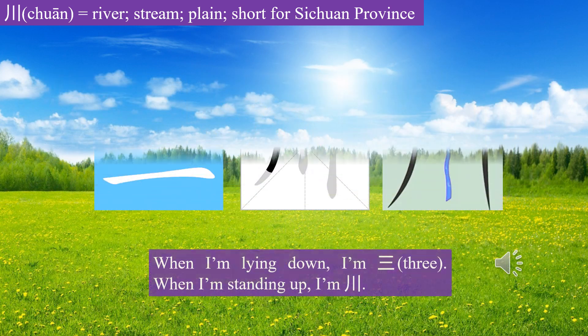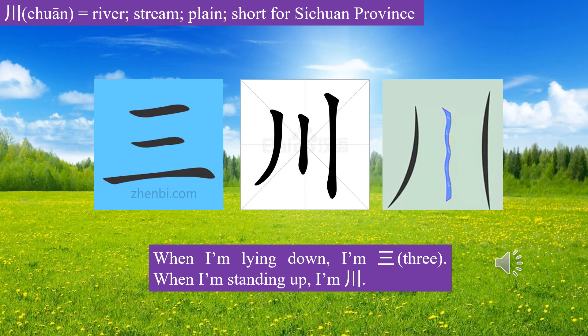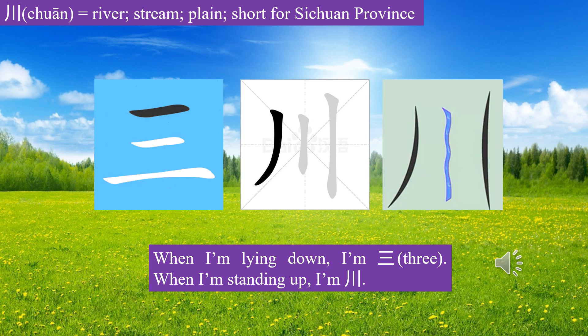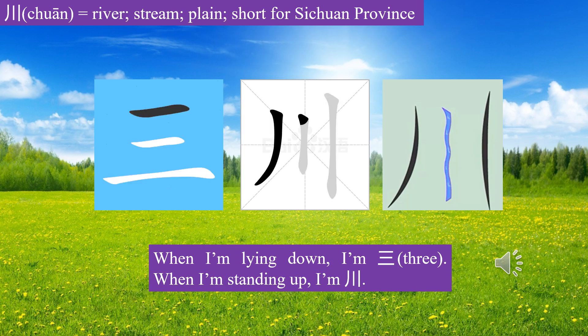Character Chuan evolves from a meandering river, represented by three curved lines. Chuan means river. Chuan also refers to a large stretch of flat land that a river irrigates. When I'm lying down, I'm San (three). When I'm standing up, I'm Chuan (river).